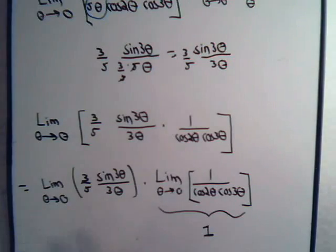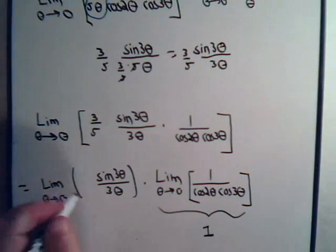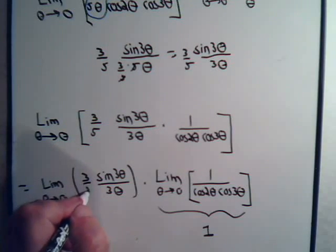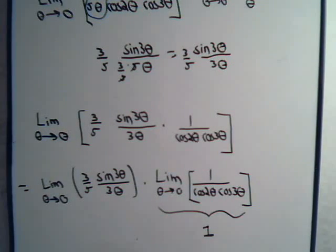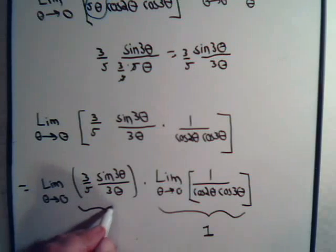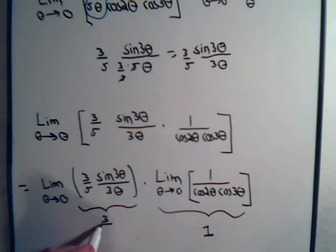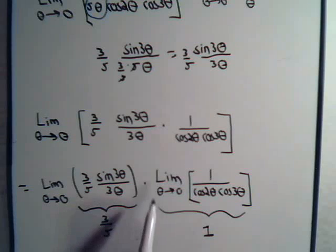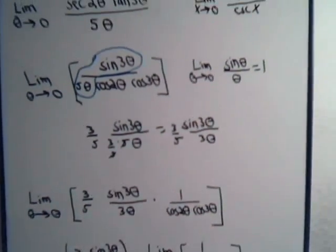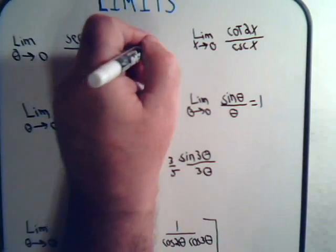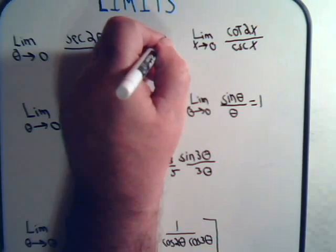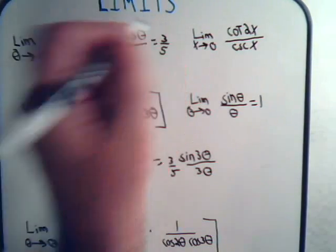So that's 1. I'm multiplying this by a constant. So the new limit is going to be 3 fifths times 1, or just 3 fifths. So the limit of this one is 3 fifths, and the limit of this one is 1. So our answer here is equal to 3 fifths.